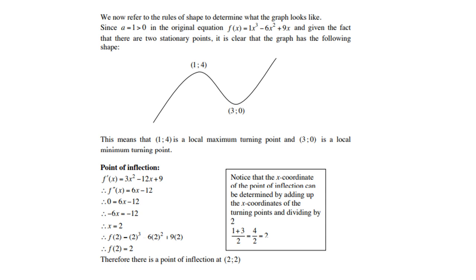For the point of inflection, find the second derivative: f''(x) = 6x - 12. Set it equal to zero to get x = 2. Substitute x = 2 into the original function to get y = 2. So the point of inflection is (2, 2). Notice that the x-coordinate of the point of inflection can also be found by adding the x-coordinates of the two turning points and dividing by two — another useful method.